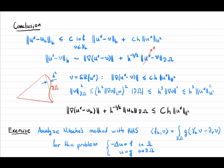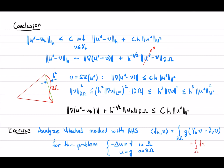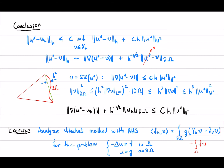Here is an exercise where Nitsche's method is applied to the same boundary value problem but with an inhomogeneous boundary condition. In that case, what we need to do is just change the right-hand side a little bit — we need to add the right-hand side we already had plus a boundary term that modifies it accordingly.